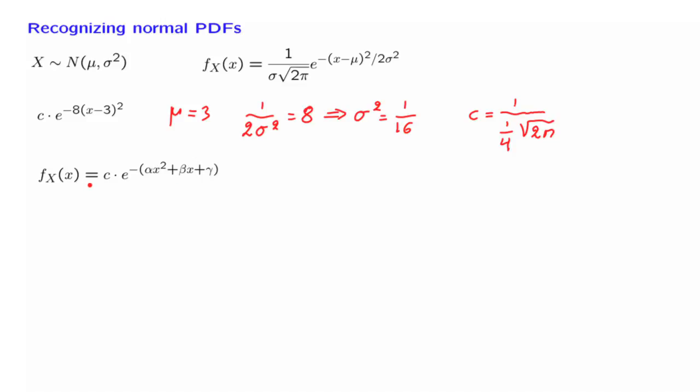A PDF must integrate to 1, so it cannot blow up as x goes to infinity, which means that this exponential needs to die out as x goes to infinity, and that will only happen if this coefficient alpha here is positive. So that we have e to the minus something positive and large, which is going to die out.